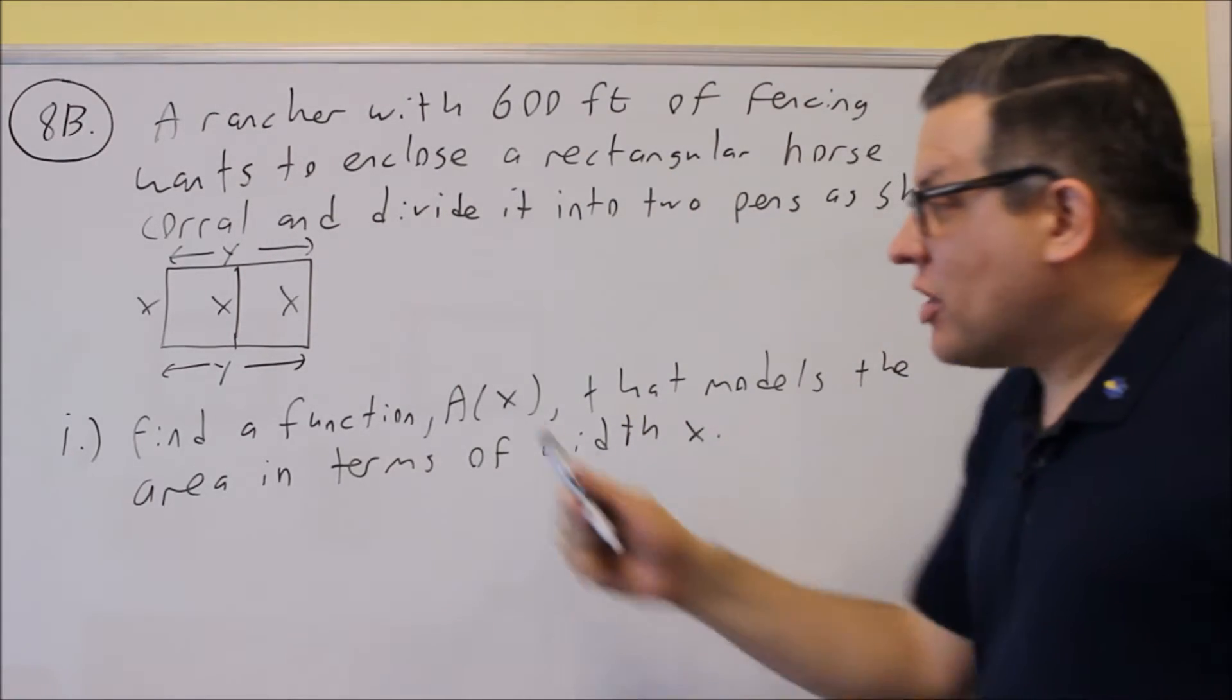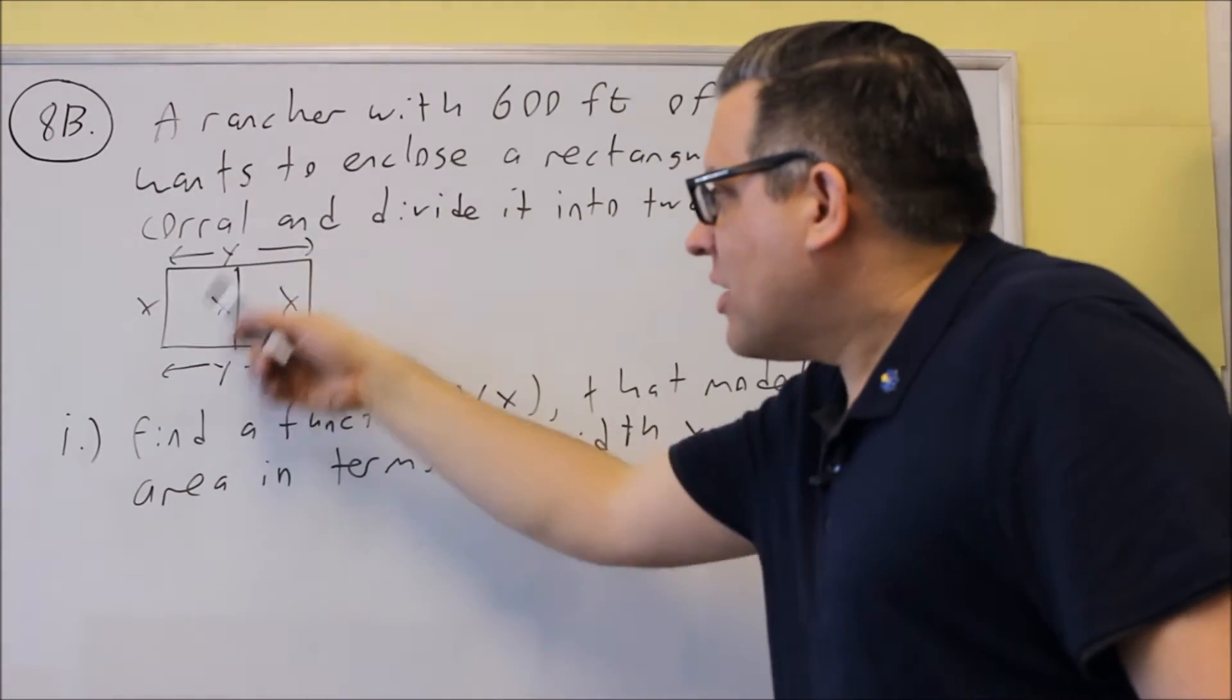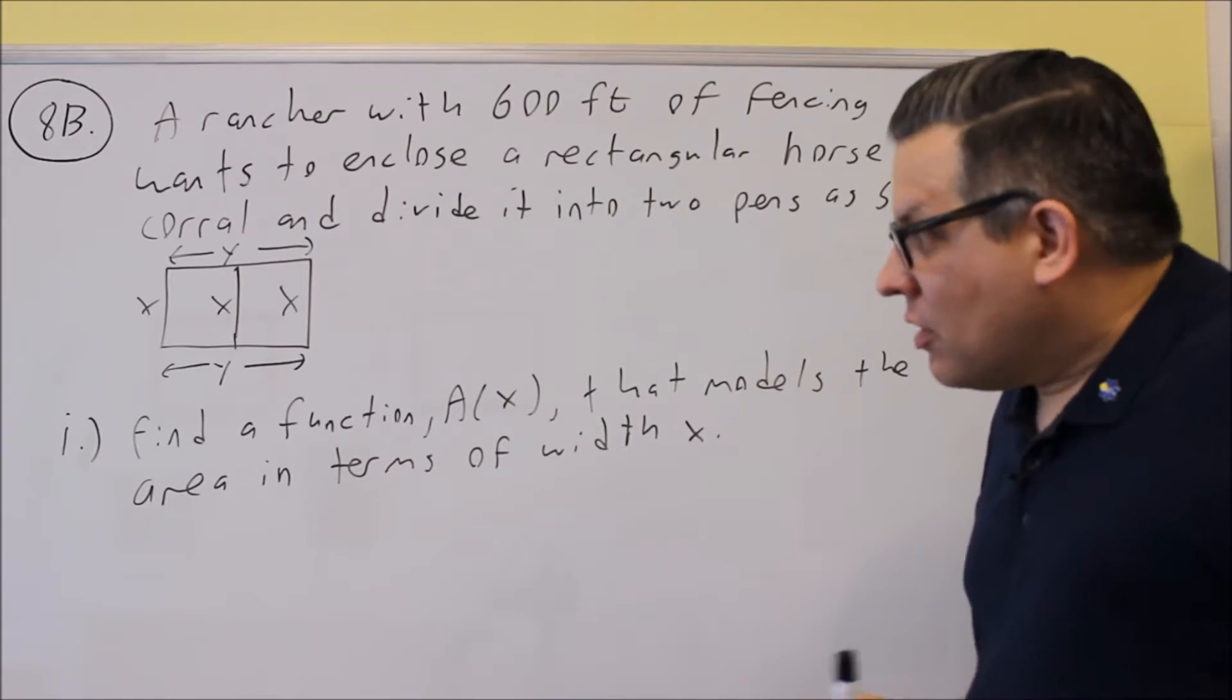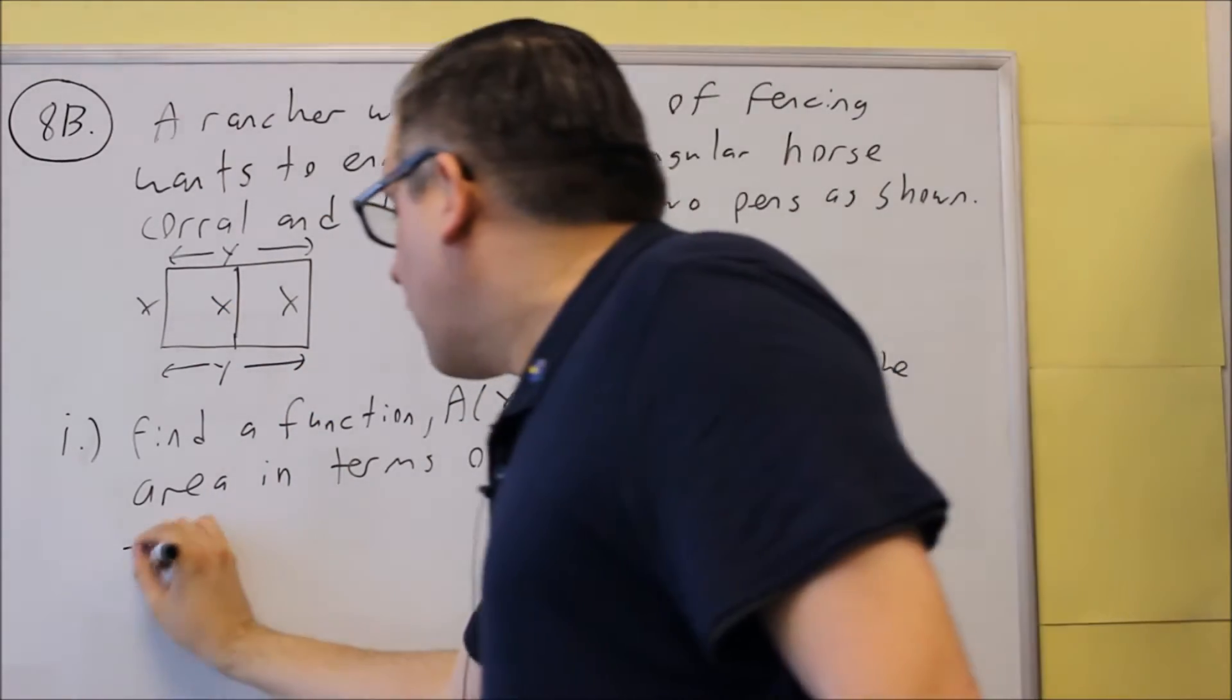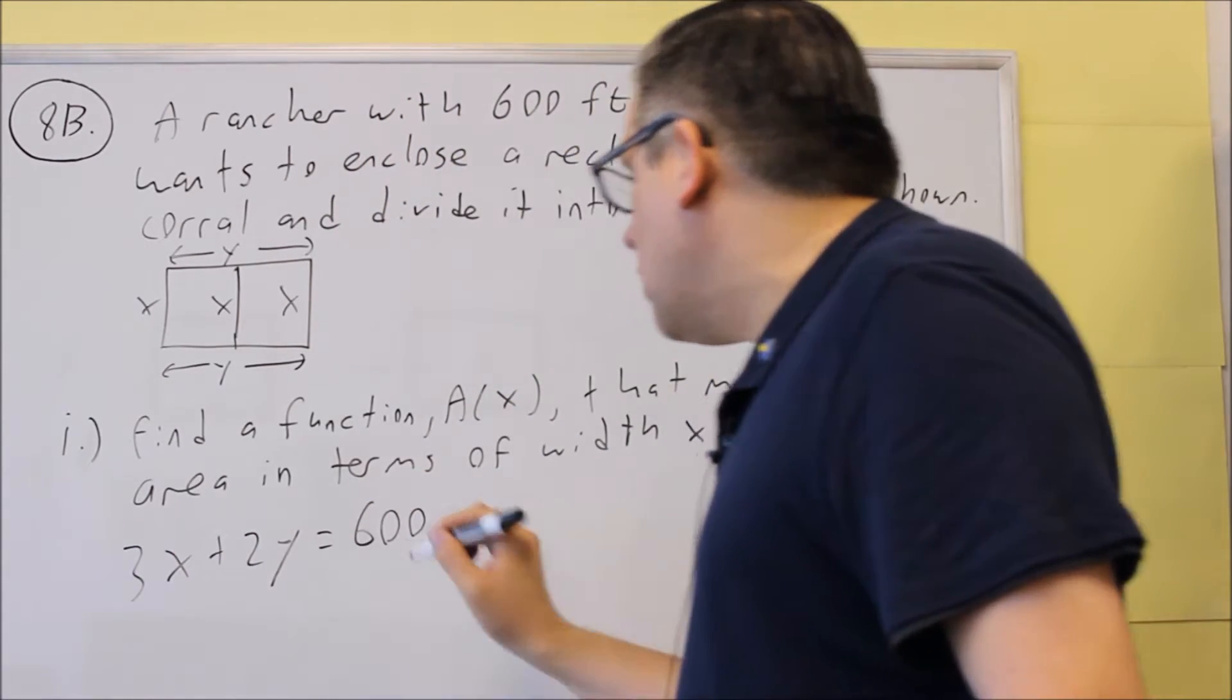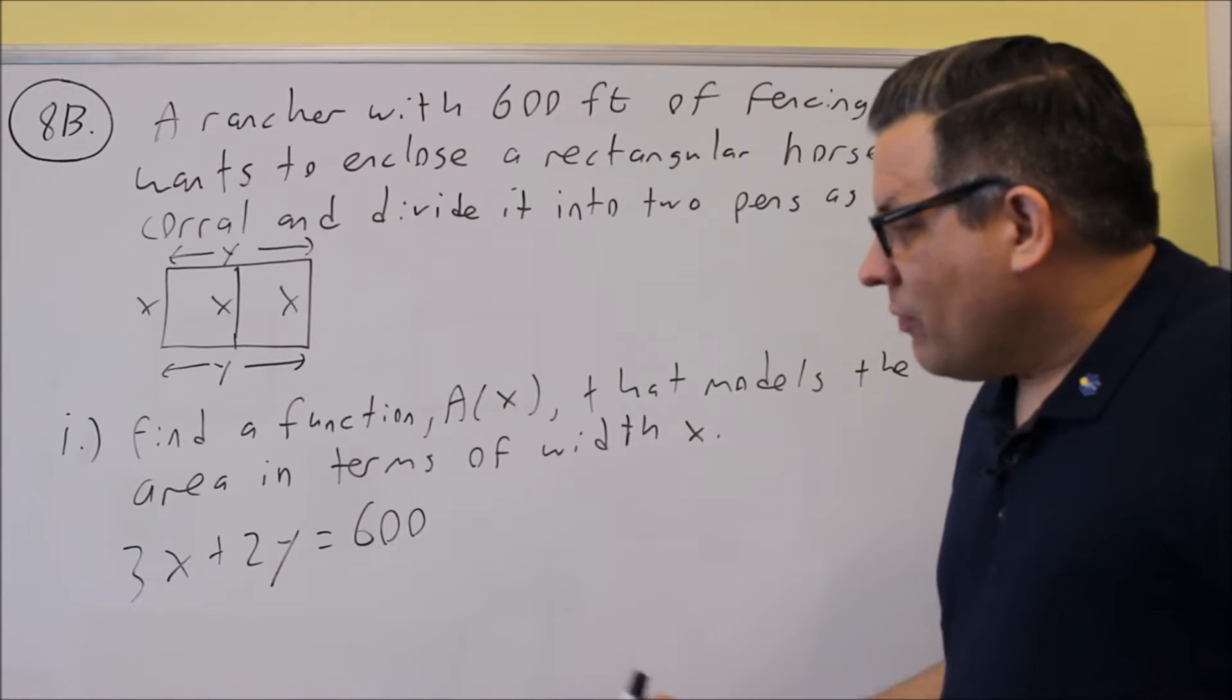Now, I have a total of 600 feet of fencing that's actually used to create this one. So all the sides that I see here that have a variable with it, I'm going to add all those together. So I have three x's and I have two y's. If I add all that together, that should give me my 600 feet of fencing that I have.